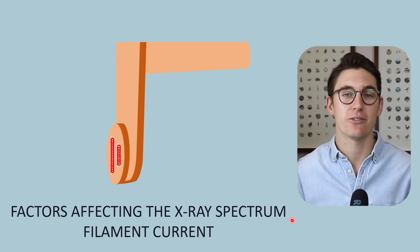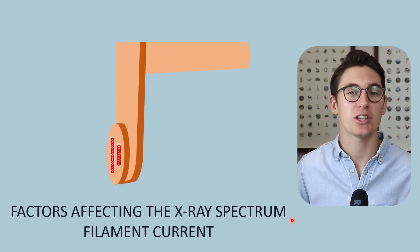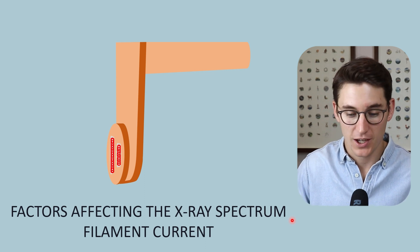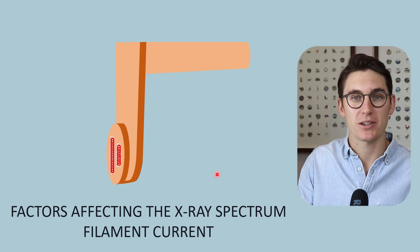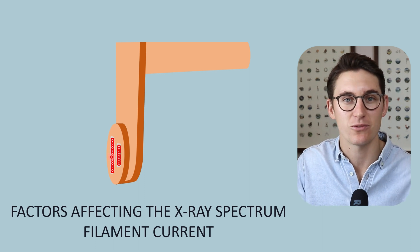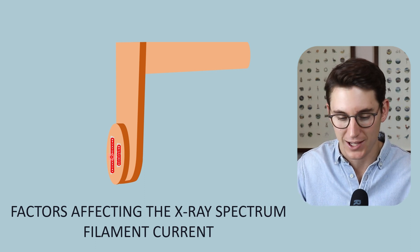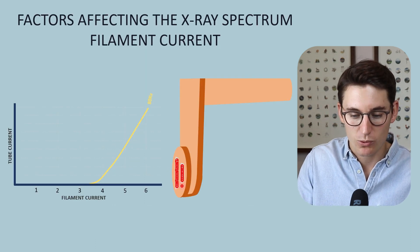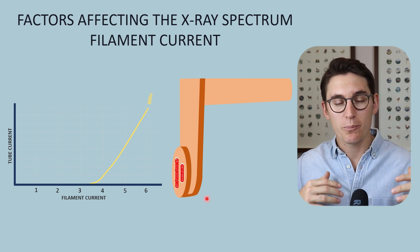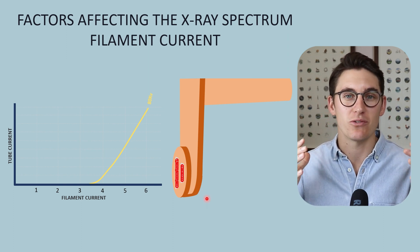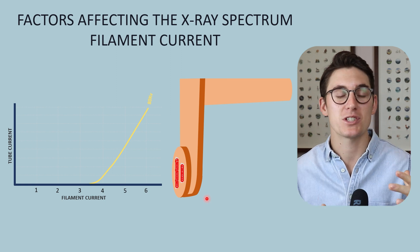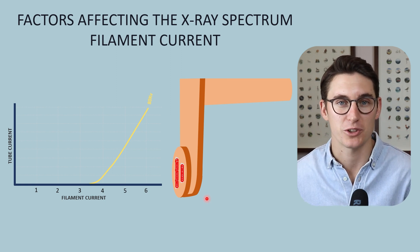Let's start with the filament current and see how changing it affects our x-ray spectrum. When we're talking about the filament current, we are talking about the current that we run through our tungsten filament on our cathode. When we run current through this tungsten filament, we make electrons available on the surface of that filament in a process called thermionic emission.